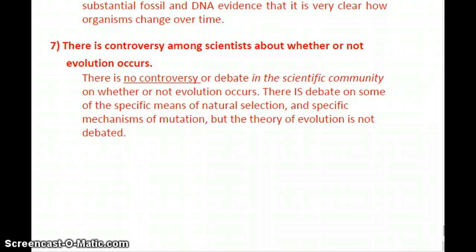The last big misconception is that there's controversy among scientists about whether or not evolution occurs. There is no controversy or debate in the scientific community on whether evolution occurs. There is debate on some of the specifics — the mechanisms of natural selection and mutation — but not on whether it happens. When people talk about 'the theory of evolution,' they're not saying evolution is a theory. The fact that evolution happens is indeed a fact. 'Theory' refers to the intricate details of how evolution happens — and this nuance in semantics can get a little confusing.